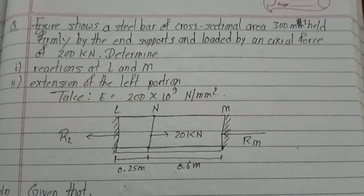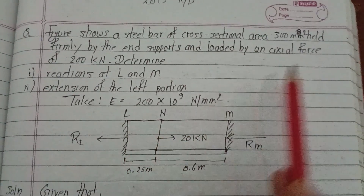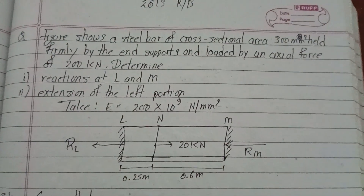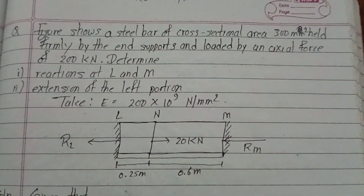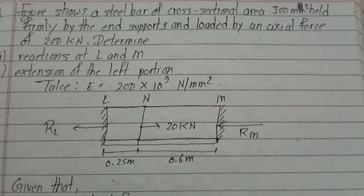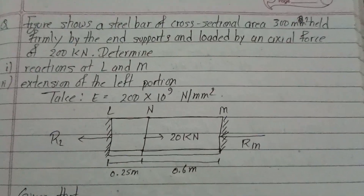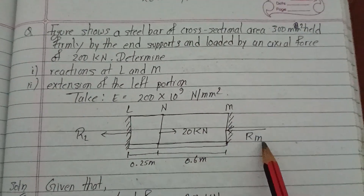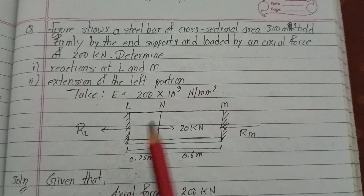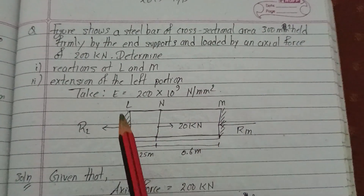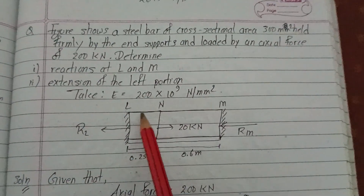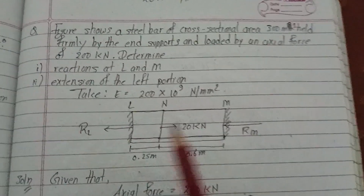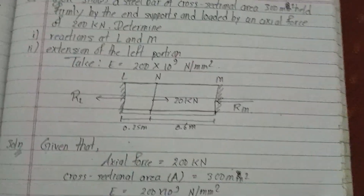Here is how the steel bar looks. The cross-sectional area is 300 mm². In this bar we will find the reactions at L and M, then we will find the extension of the left portion.